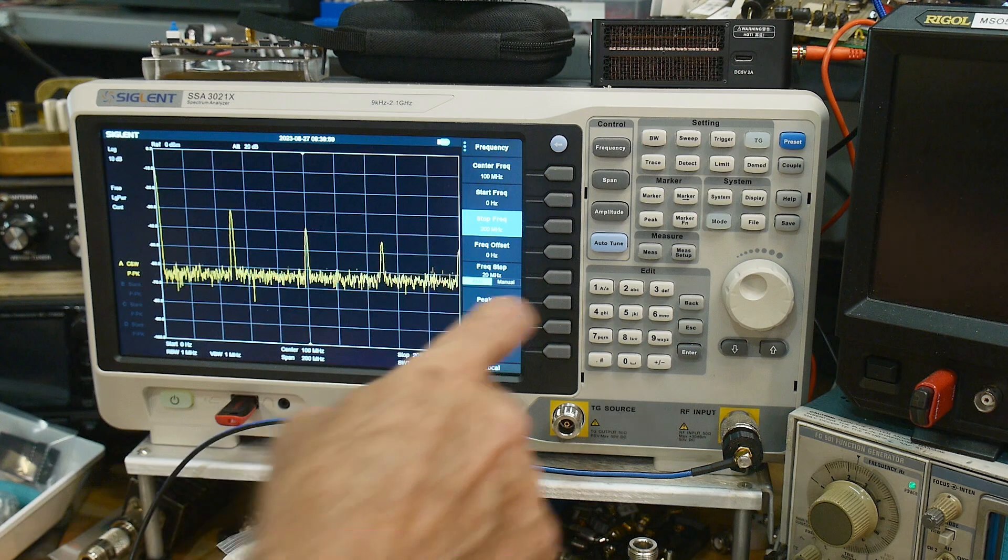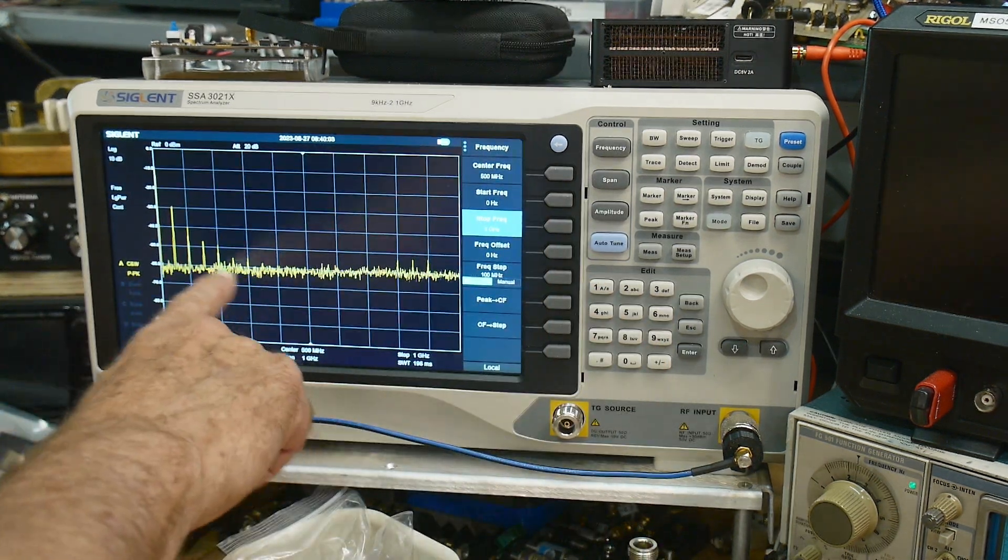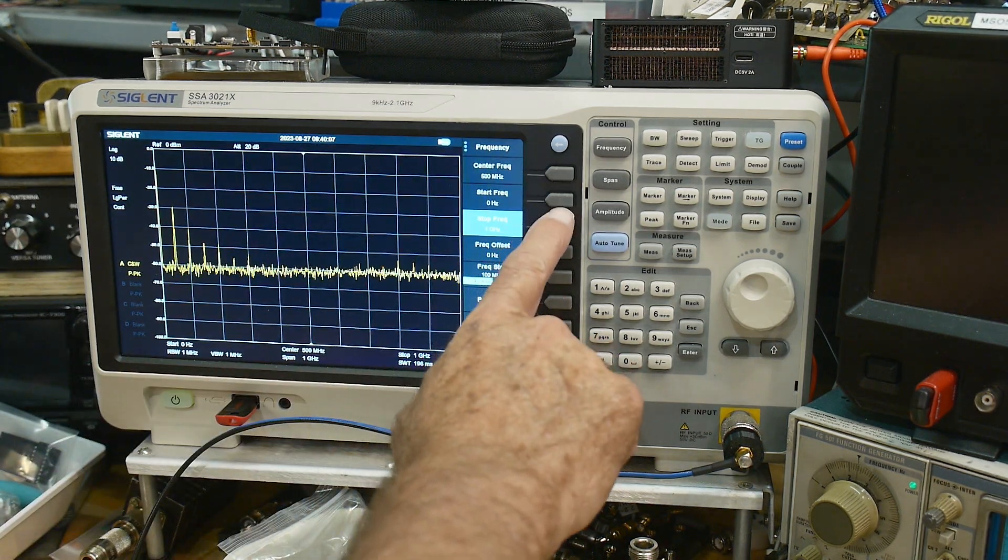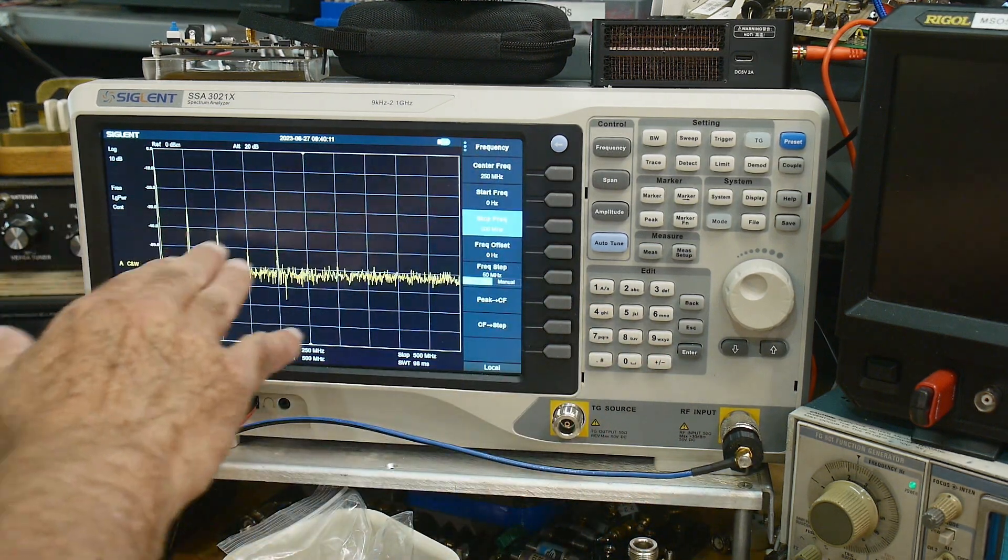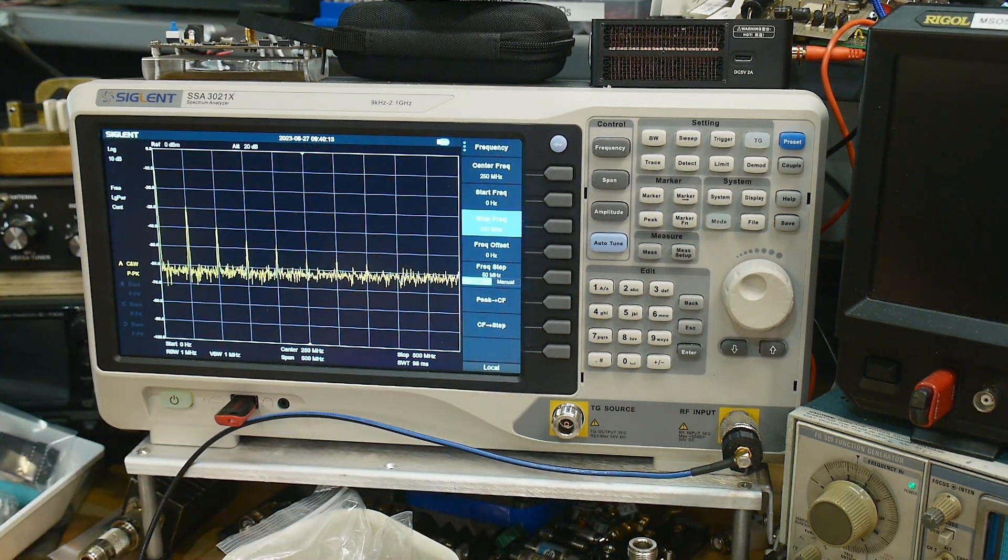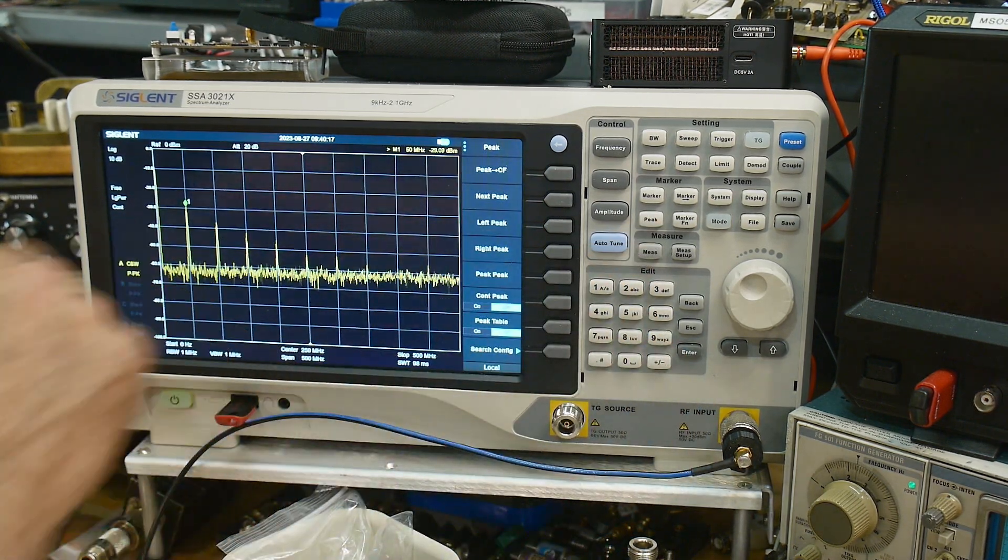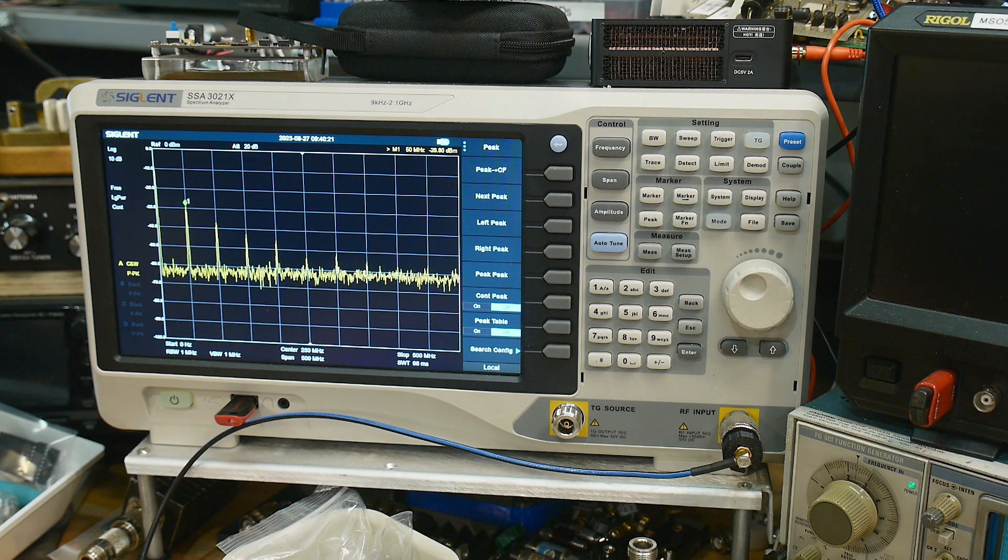So let's put a stop frequency of let's say 200 megahertz. And there we go. We're getting a couple of harmonics of something. Let's put a stop frequency of a gigahertz here. Let's see. Oh, yeah. It's all kinds of stuff in there, but let's say here, 500 megahertz.